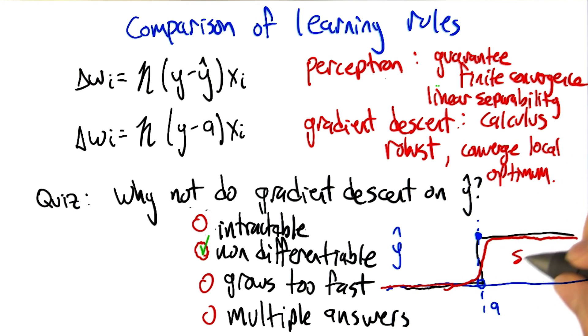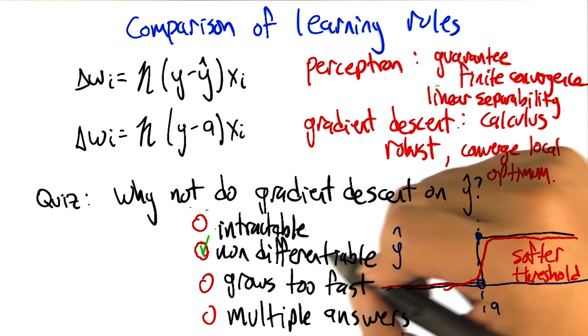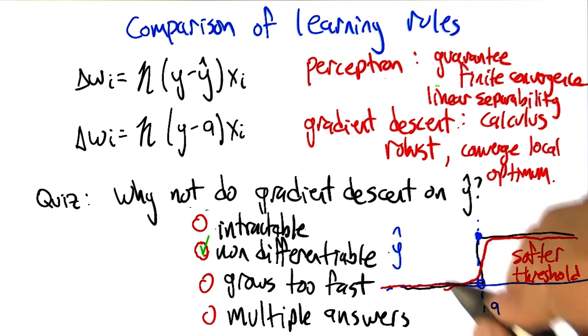So kind of a softer version of a threshold. Which isn't exactly a threshold, but at least it's differentiable. So that would kind of force the algorithm to put its money where its mouth is. Like, if that really is the reason that the problem is non-differentiable, fine. We'll make it differentiable. Now how do you like it?